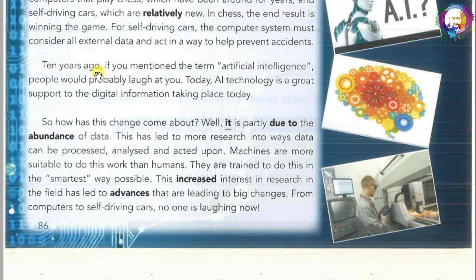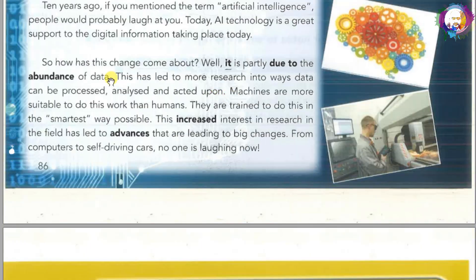Ten years ago, if you mentioned the term artificial intelligence, people would probably laugh at you. Today, AI technology is a great support to the digital information taking place today. So how has this change come about? Well, it is partly due to the abundance of data. This has led to more research into ways data can be processed, analyzed, and acted upon. Machines are more suitable to do this work than humans. They are trained to do this in the smartest way possible. This increased interest in research in the field has led to advances that are leading to big changes. From computers to self-driving cars, no one is laughing now.